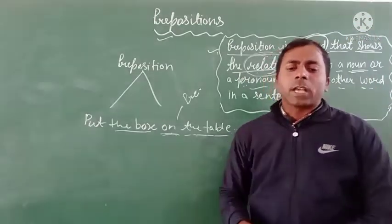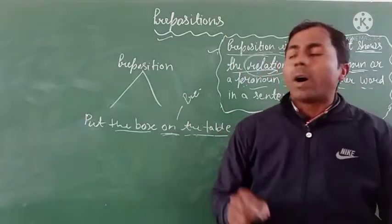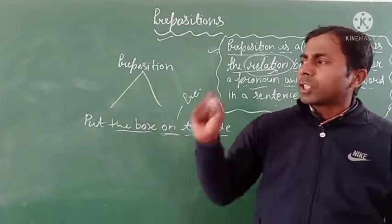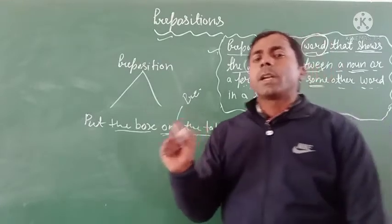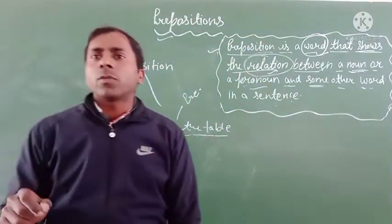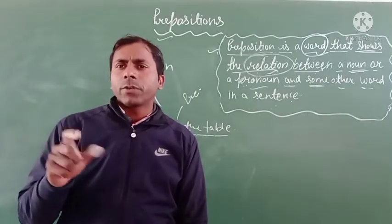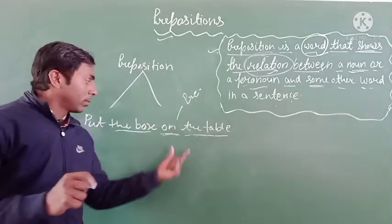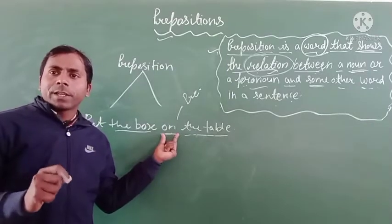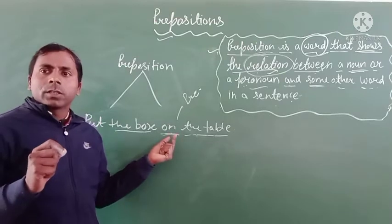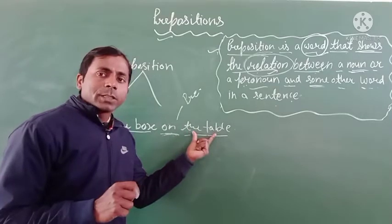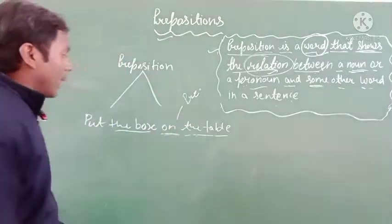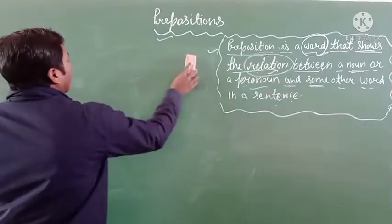Another example: South Africa is famous for its diamond. Why was South Africa famous? Famous for its diamond. So this preposition word is used to show the relation between a noun and a pronoun. In each sentence, the preposition comes before a noun, and that noun is the object of the preposition. So this noun word is the object of the preposition 'on'.